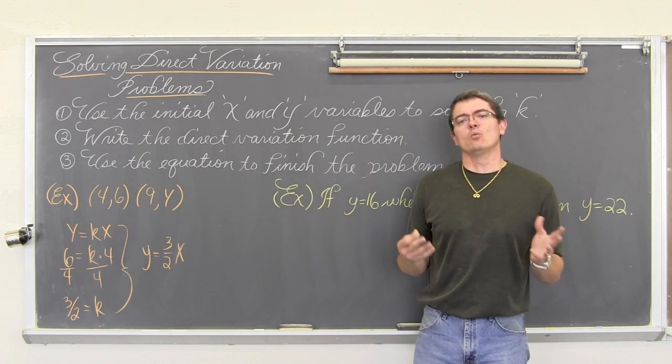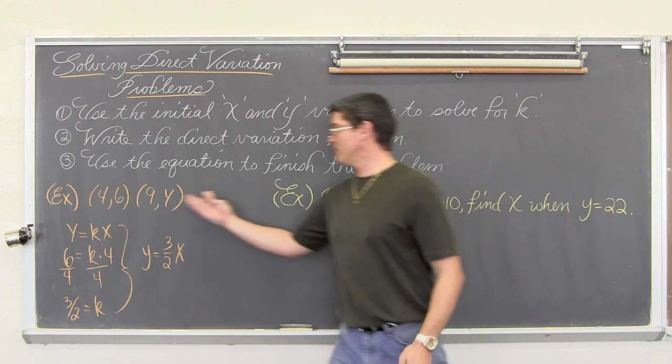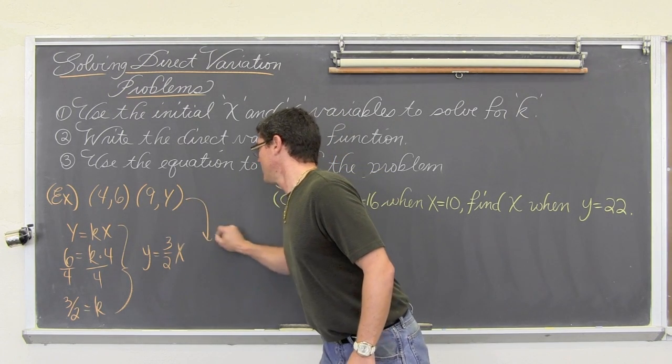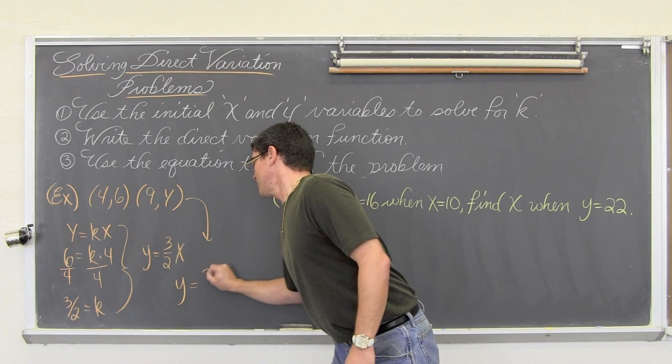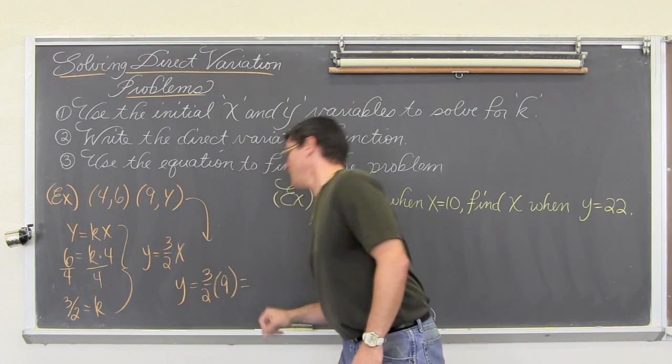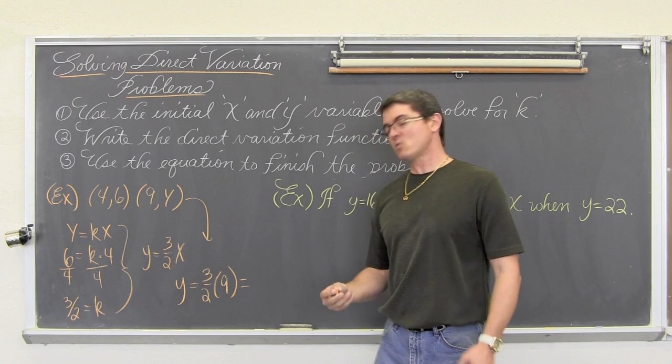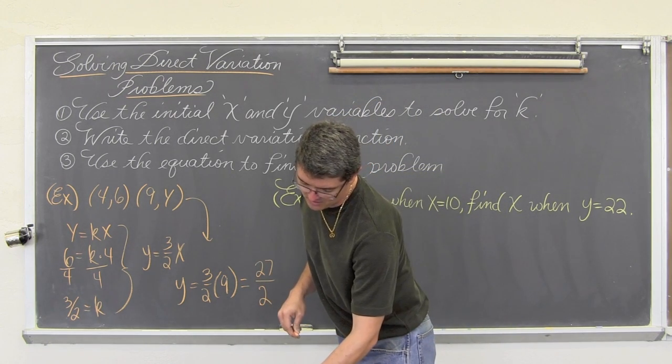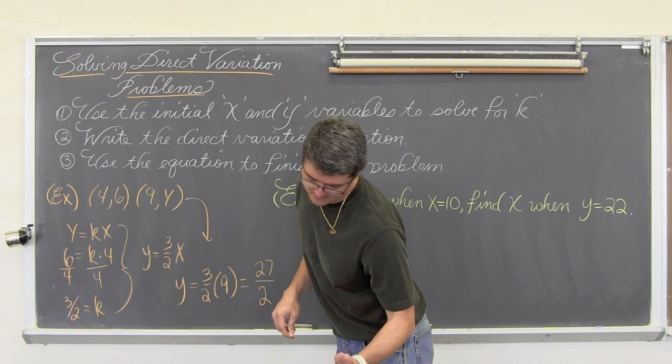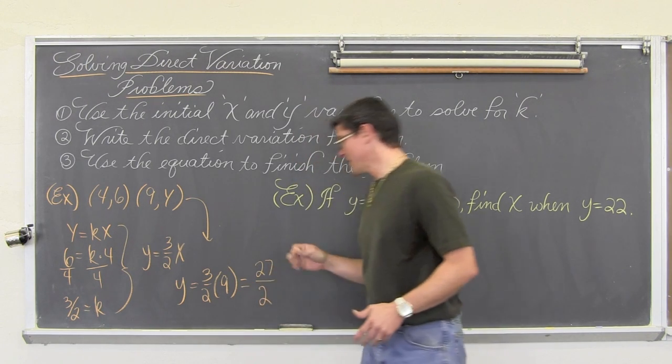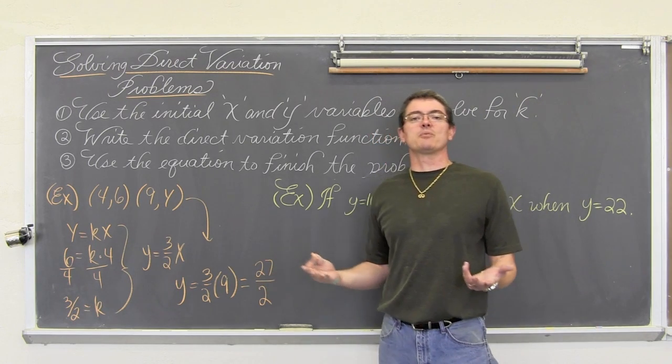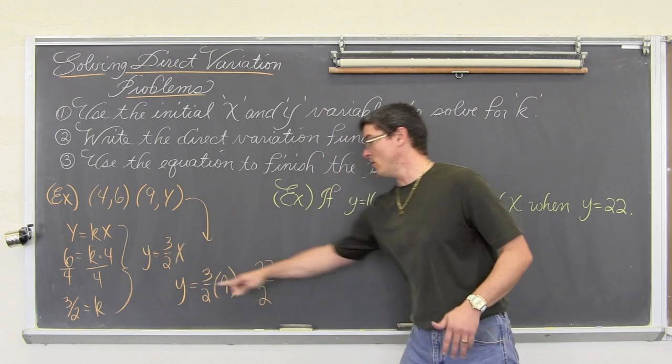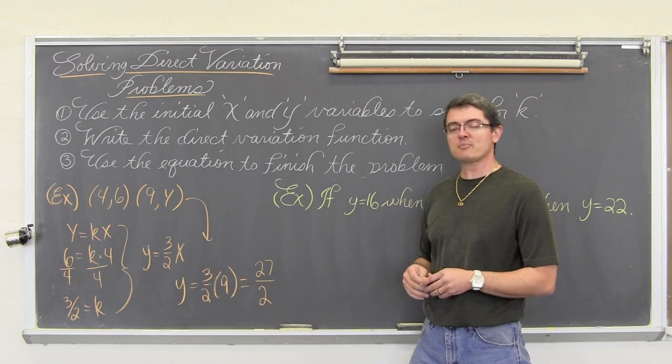Now, we are going to use this equation to finish the problem. Hey, what if x is 9? What would y be? Well, if x is equal to 3 times 9, let's just take this equation and go, okay, so for this part, y is equal to 3 halves times 9. Well, that is going to be 3 times 9 is 27, so it is 27 over 2. Quick check of my notes here. And we are good. Okay, so that is how you do direct variation problems. Give an initial value, plug them in, find k, write the equation, and then use the equation if necessary, or asked for, to finish the problem up.